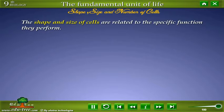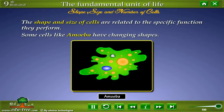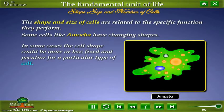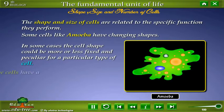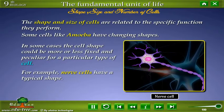The shape and size of cells are related to the specific function they perform. Some cells, like amoeba, have changing shapes. In some cases, the cell shape could be more or less fixed and peculiar for a particular type of cell. For example, nerve cells have a typical shape.